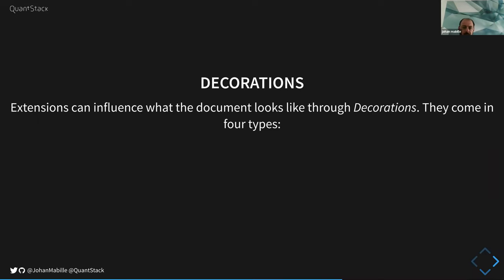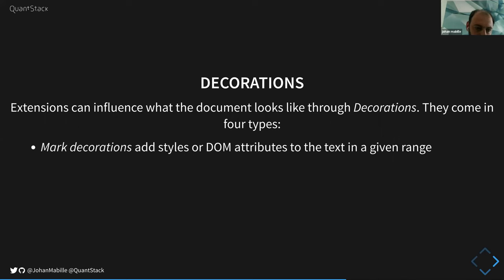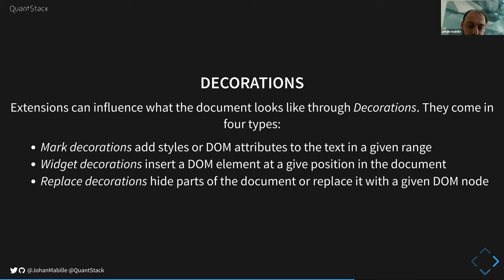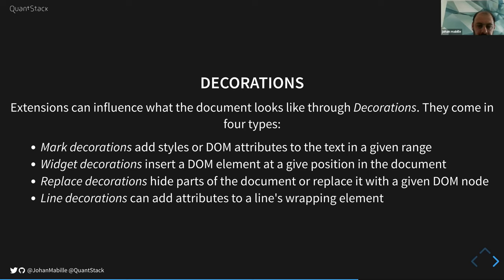CodeMirror 6 provides a new kind of object called decorations — the mechanism used by extensions to influence what the document looks like. We have four types: mark decorations for adding style or attributes to text in a given range; widget decorations for literally adding a new DOM element at a given position; replace decorations for hiding or replacing parts of the document — that's what we use for code folding; and line decorations that can add attributes to a line wrapping element, for example to highlight an entire line.